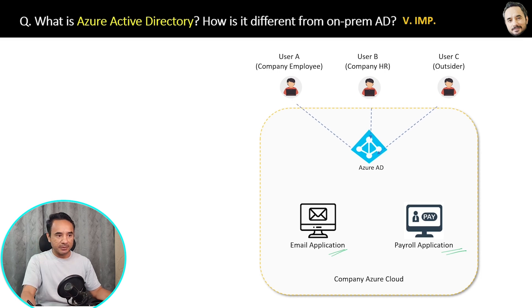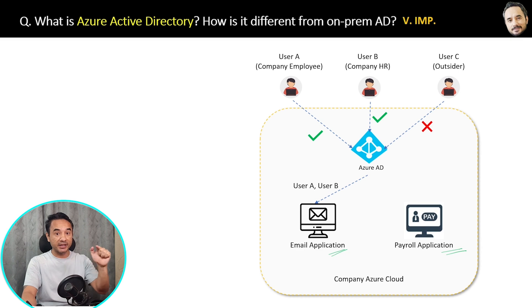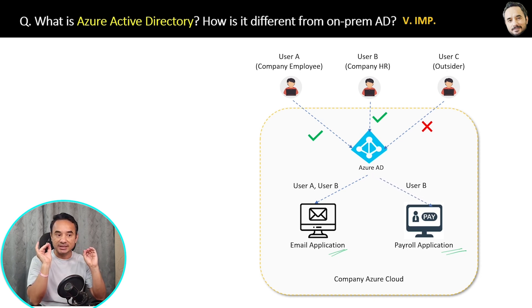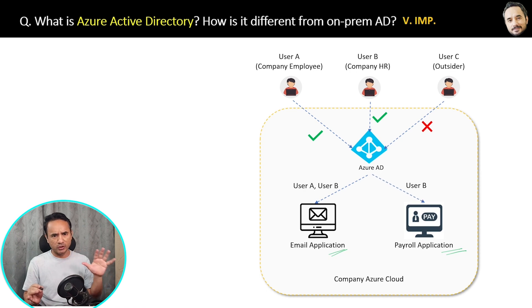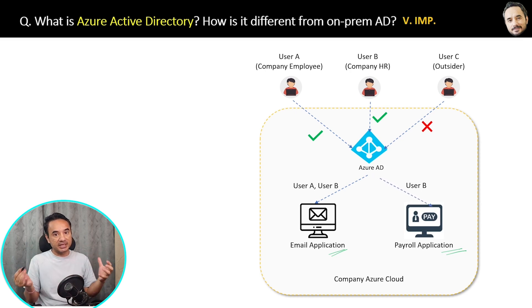When requests come from all three users, for the email application, only User A and User B will be able to access it. The outside user will be blocked because he is not an employee. For the payroll application, only User B — the company HR — will be allowed access, because only HR can manage payroll. Even User A, a general employee, will not be able to access the payroll application. That is the work of Azure AD: to decide which employee can access what, and what rights they have.